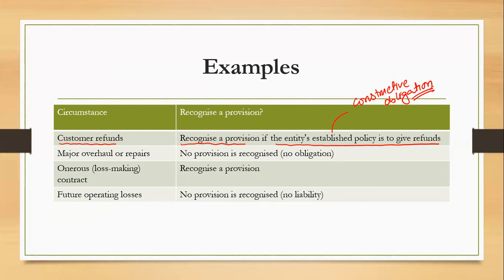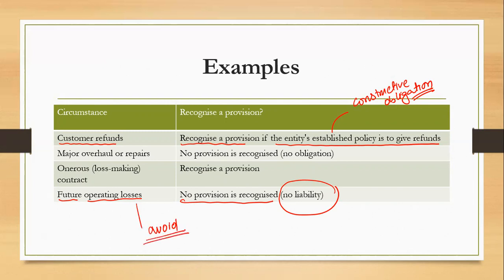However, if there is no obligation, there is no provision. For example, if an entity is expecting future operating losses, IAS 37 does not allow a provision — because there is no present obligation; you can avoid those losses by avoiding the activities. Similarly, if an entity plans a major overhaul or repair, no provision is recognized as there is no present obligation. The simple rule is: to create a provision, you need a liability — legal or constructive — and all three recognition conditions must be met: present obligation, probable payment, and reliably estimable amount.